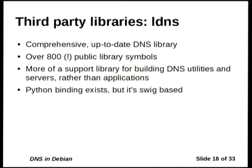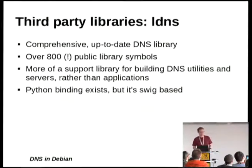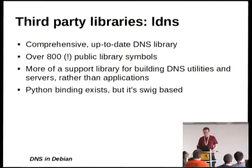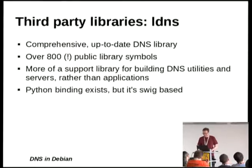The big 800-pound gorilla of third-party DNS libraries is something called LDNS. It's fairly comprehensive — if you look at the symbol table, it has over 800 public symbols. This is a ridiculously large library. If you're building DNS servers, this is probably the library you want to use, but it's probably overkill for simpler uses. It's a C library. It does have Python bindings, but they're SWIG-based and difficult to figure out.